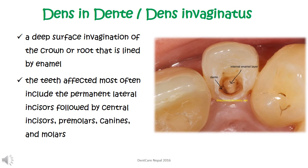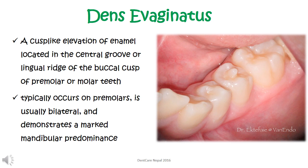Dens in dente is a deep surface invagination of the crown or root that is lined by enamel. The teeth most often affected include the permanent lateral incisors, followed by central incisors, premolars, canines, and molars. Dens evaginatus, as the name suggests, is a cusp-like evaginated area of enamel located in the central groove or lingual region of the buccal cusp of a premolar or molar tooth. It typically occurs on premolars, is usually bilateral, and demonstrates a marked mandibular predominance.